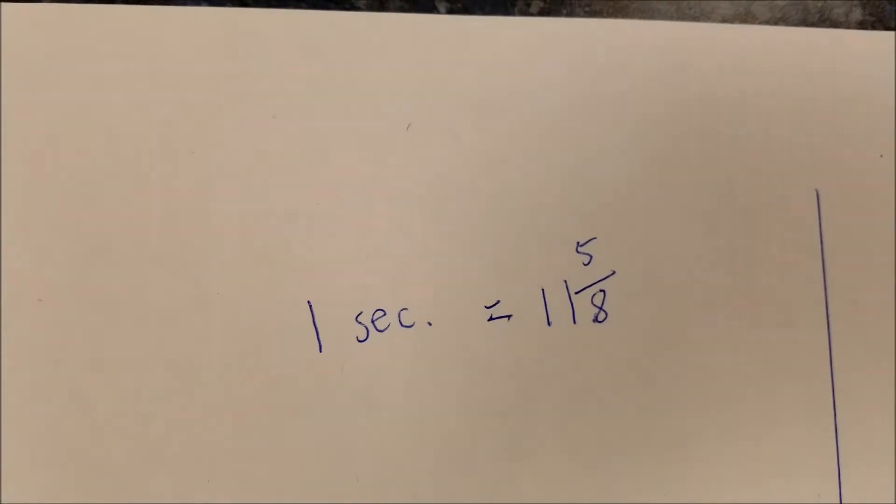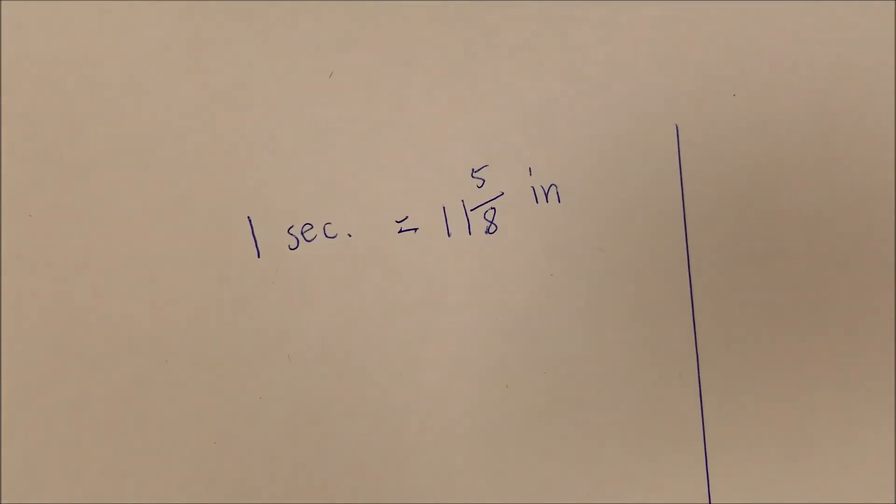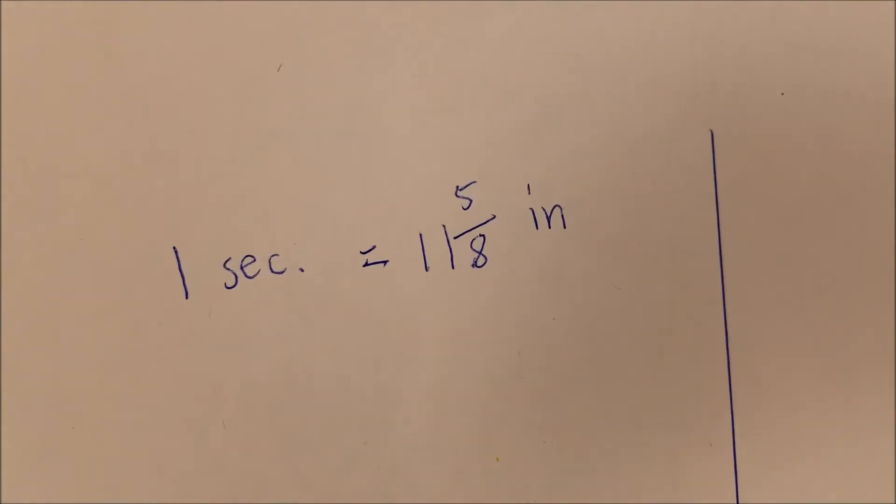And then I'll convert that to a decimal in a second here when I do the math. So our robot can go 11 and 5 eighths inches in one second. So I will put on my math hat and we will figure out now how far is that in miles per hour. I'll meet you at my desk.